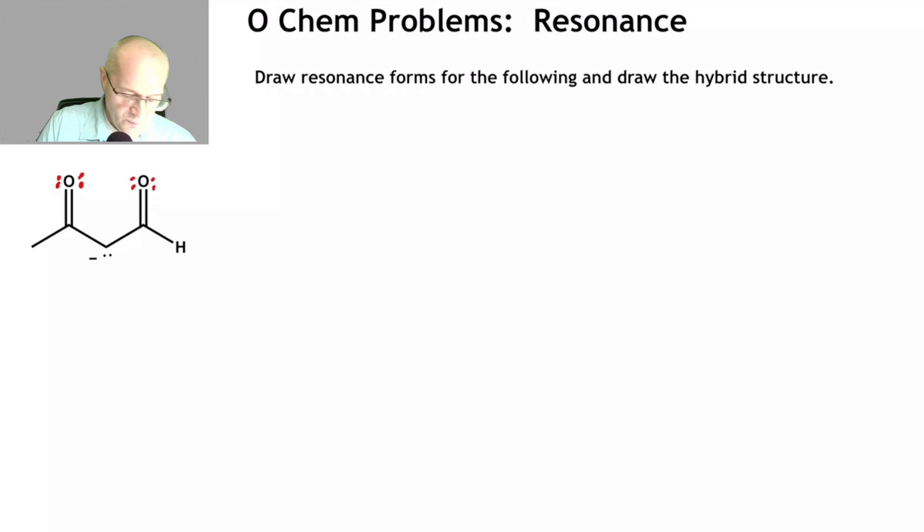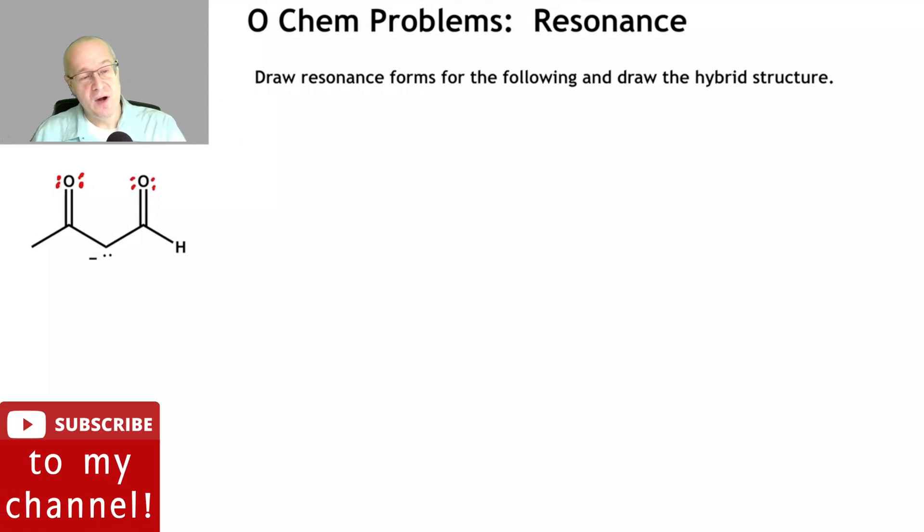Okay, so I have a lone pair here. And I have carbonyls flanking it on both sides. So I know I can draw resonance forms going to the left to the carbonyl and to the right to the carbonyl.